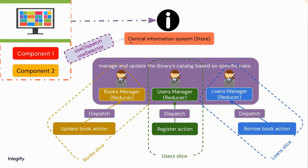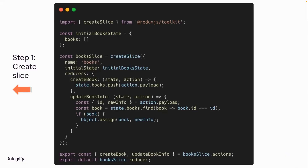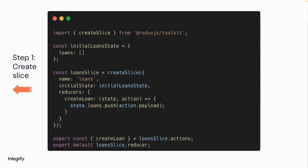Now let's see these concepts in code. The first step is to set up the reducer and actions. In Redux Toolkit, you don't need to create the reducer and actions separately. Instead, you have the concept of a slice — a method to create the reducer and its actions at the same time. Looking at the code, we have the reducer and several methods to update the initial state, and each method carries out a corresponding algorithm based on the action received. Finally, we export the reducer and actions for later use. Similarly, slices are created for users and loans as well.